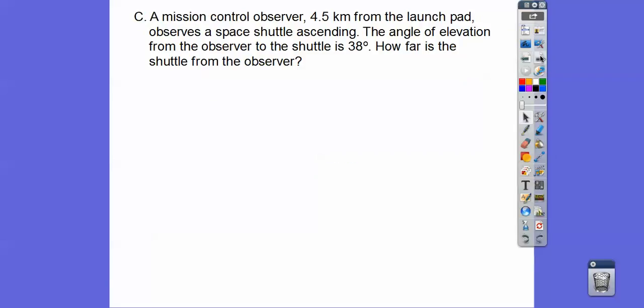Three more. A mission control observer that's 4.5 kilometers from the launch pad observes the space shuttle that's ascending. Ascending is going up. Descending is going down. So the angle of elevation from the observer to the shuttle is 38 degrees. How far is the shuttle from the observer?